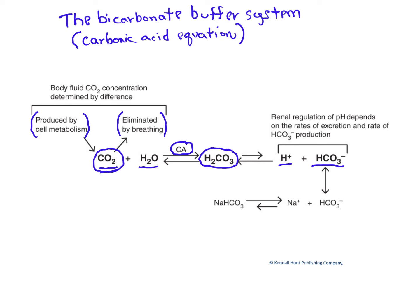Now shifting attention to the right side of the equation, where the protons and bicarbonate are shown. The kidneys have the ability to powerfully control the rate at which both protons and bicarbonate ions are excreted in the urine. If the body is in a low pH stress, the kidneys can increase the proton content of the urine and reduce the bicarbonate concentration. In an alkaline challenge, the kidneys can do the reverse. By manipulating proton and bicarbonate levels in the urine, the kidneys can affect a shift in the direction of the carbonic acid equation as necessary.